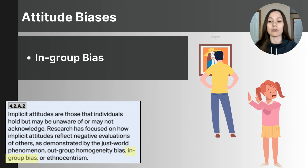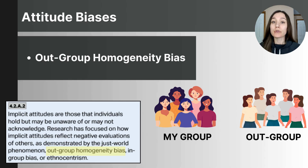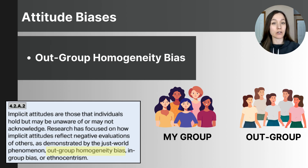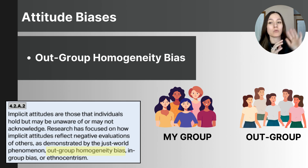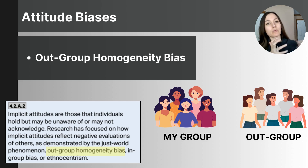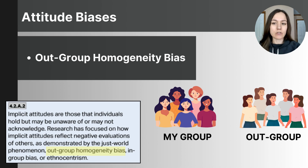Out-group homogeneity bias is our tendency to view members of an out-group as being the same or more similar to each other, while perceiving members of our own group as having nuance, diversity, and uniqueness. Homogeneity refers to having characteristics that are uniform and similar. In social psychology, out-group homogeneity bias means we ignore differences among out-group members, overgeneralizing about them, which reinforces stereotypes and makes it harder to see individuals in that group as unique.